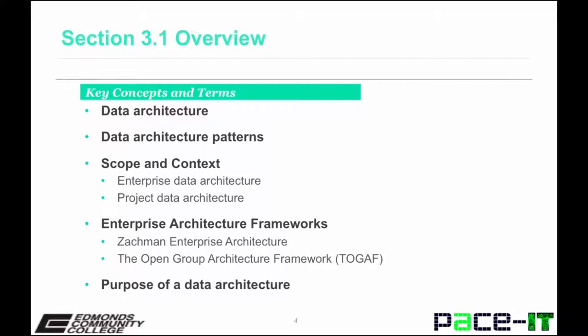These are complementary frameworks that you will be introduced to in the section materials. The data architecture is one aspect of an organization's enterprise architecture. It typically refers to a collection of models and definitions that serve as master blueprints designed to align IT programs and information assets with business strategies. It's used to guide data integration, quality, and successful delivery of information to address the organization's needs.